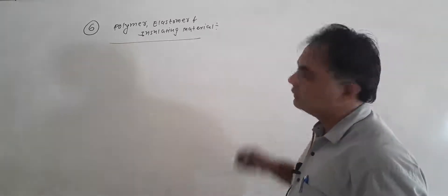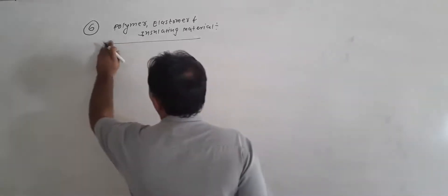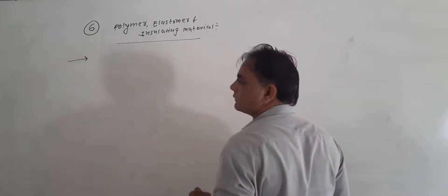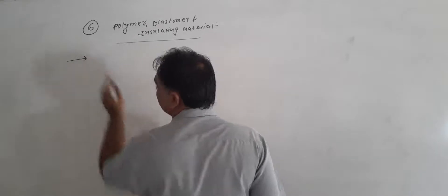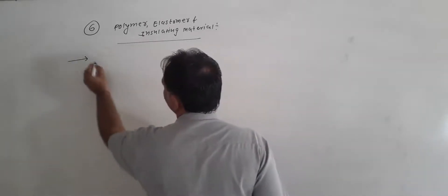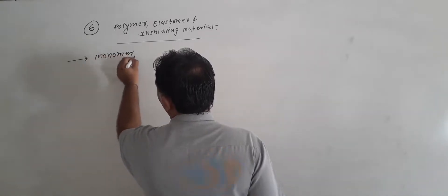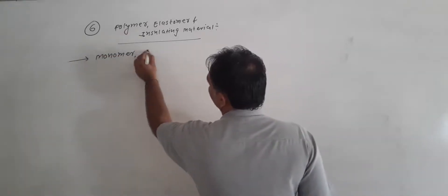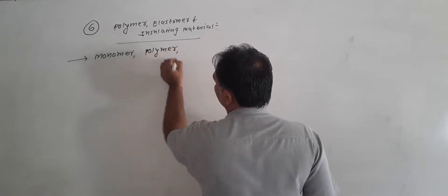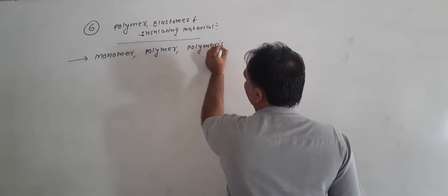In today's lecture on polymer, elastomer, and insulating material, we have to understand three key concepts: first is monomer, second is polymer, and third is polymerization.